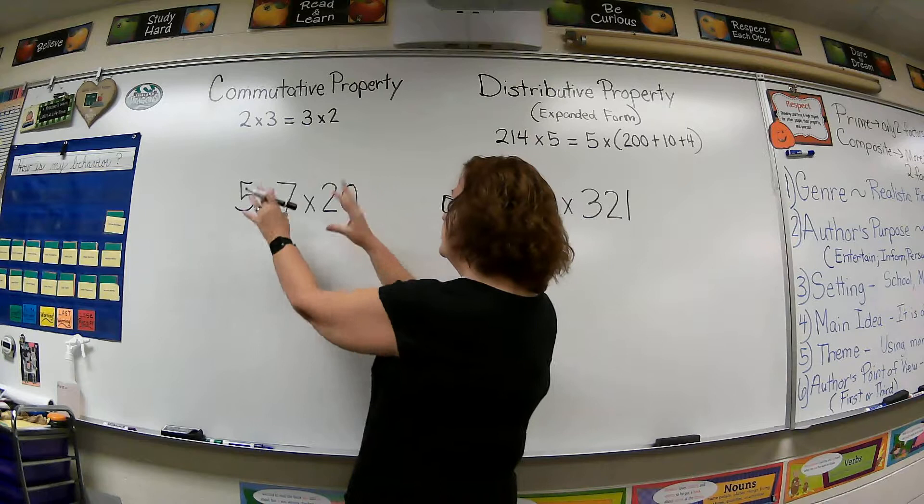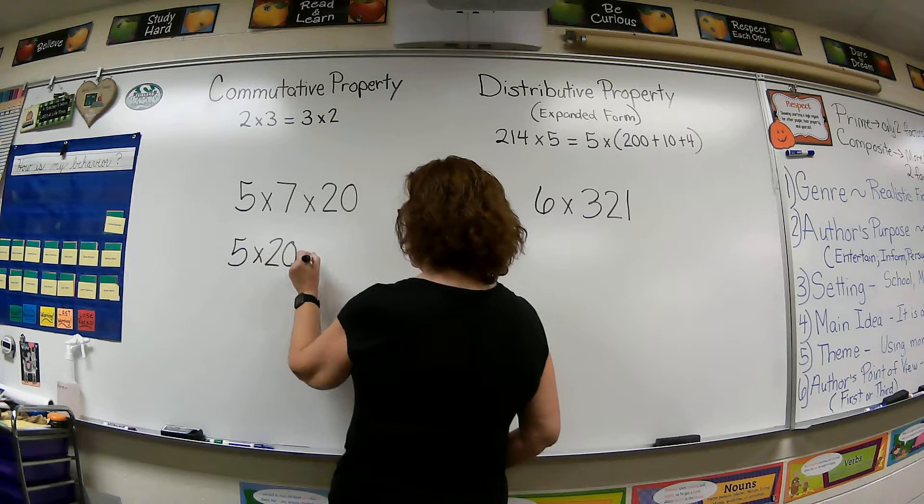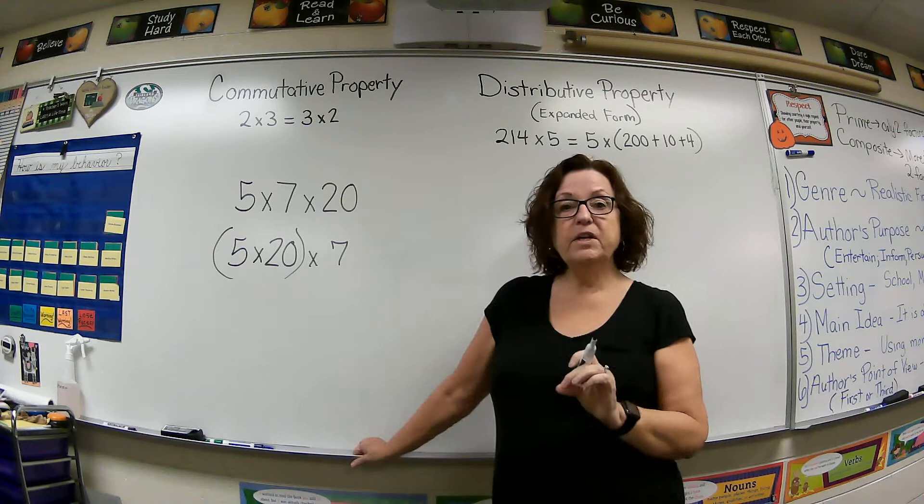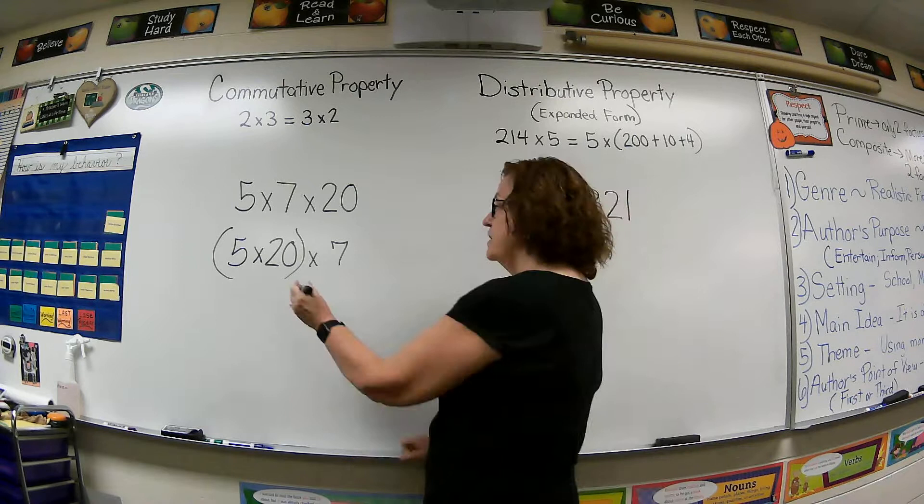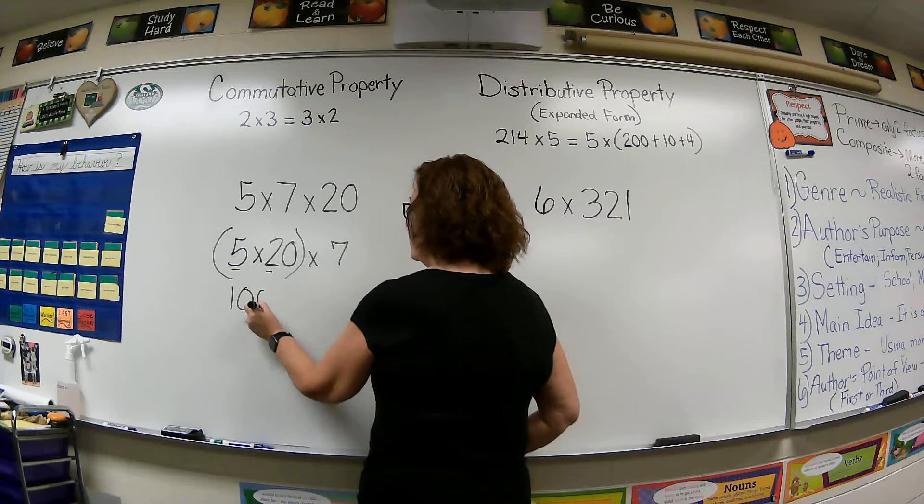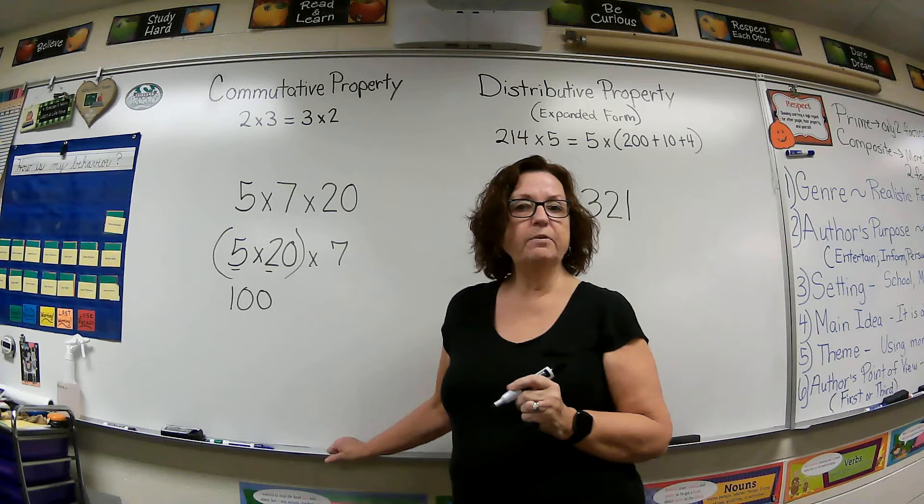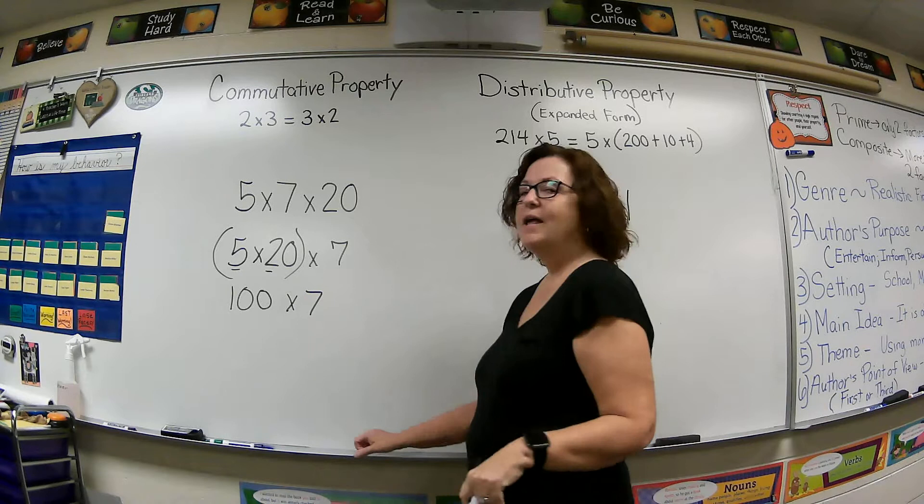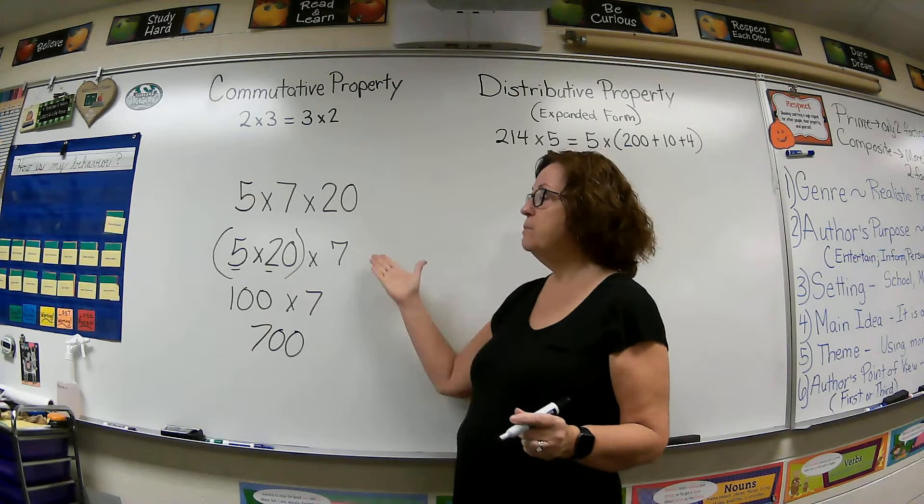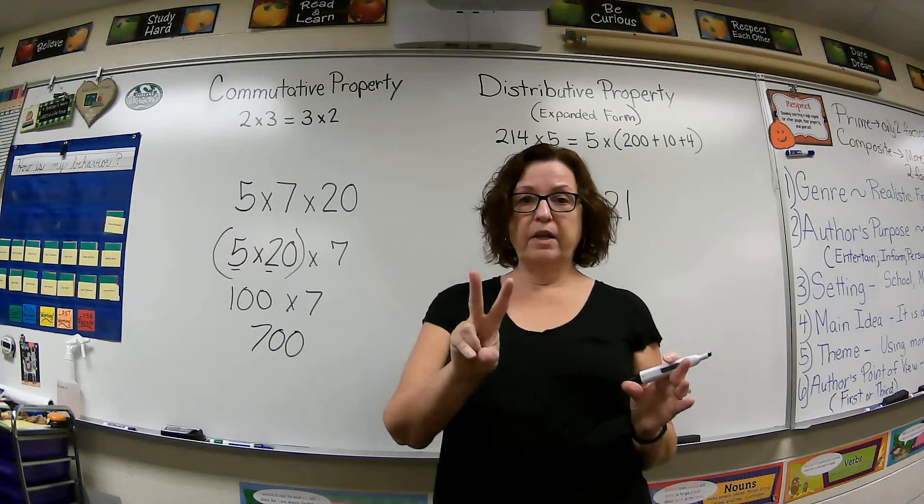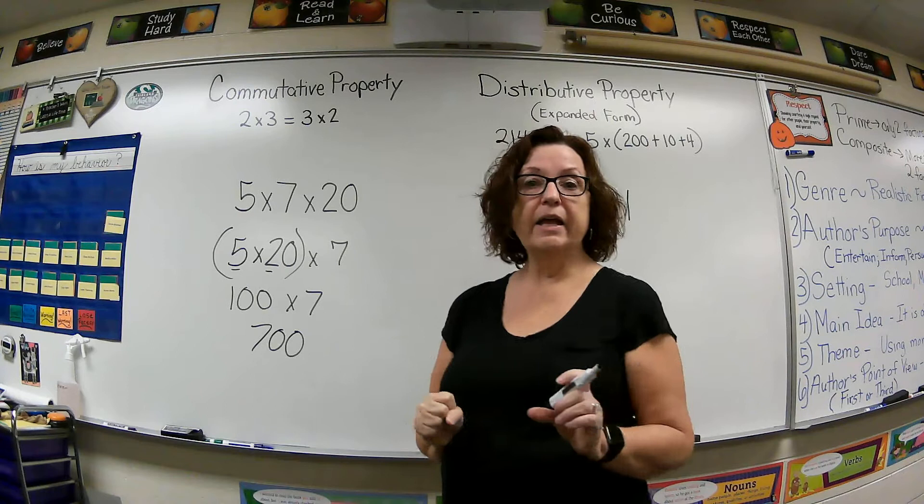All right, so how about if we move these around and we say 5×20×7, and we're going to focus on doing 5×20 first. Now you may already have that number in your mind, but in case you don't, you can use your basic fact. 5×2 is 10, and then put that extra zero at the end. 5×20 is 100, and then I can bring the rest of this problem down. Oh my goodness, that's so easy, isn't it? 100×7 is 700. Okay, so that's an example of the commutative property where I just move the numbers around so that I can get two numbers that multiply super easily, maybe even in my head, and then work the rest of the problem.